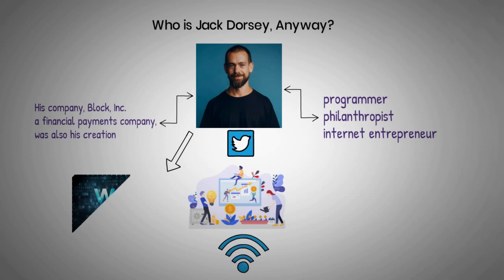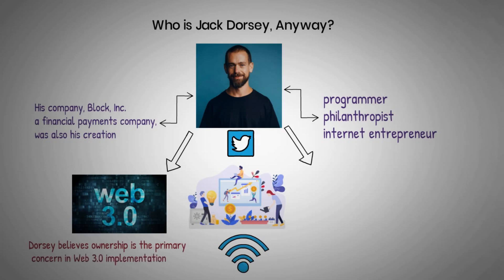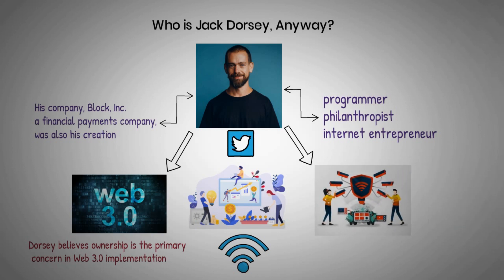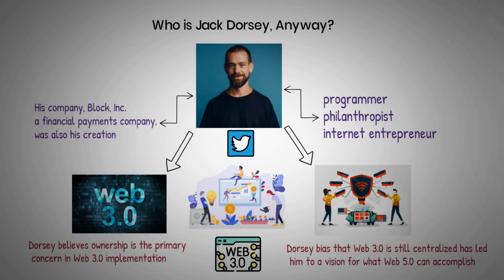Dorsey has voiced criticism of Web 3.0 in recent months. He believes ownership is the primary concern in Web 3.0 implementation. He stated that the internet does not own it and that venture capitalists and limited partnerships still hold ownership. He believes that Web 3.0 remains a central program with a different name. Dorsey's belief that Web 3.0 is still centralized has led him to a vision for what Web 5 can accomplish.